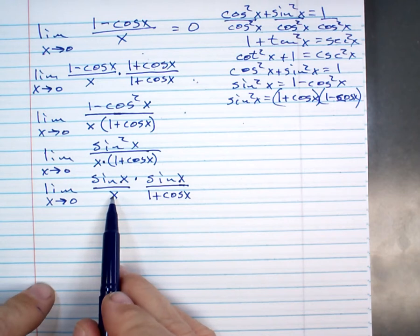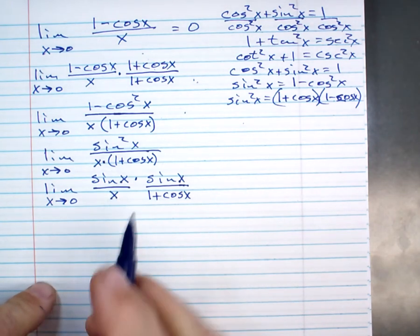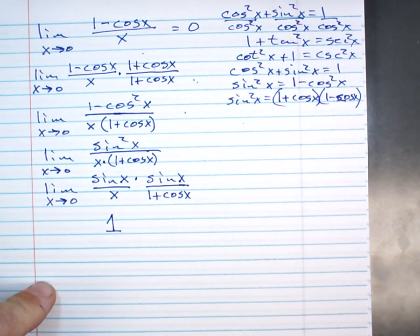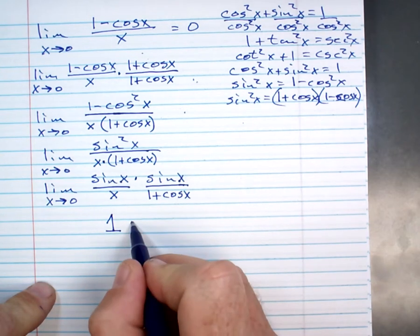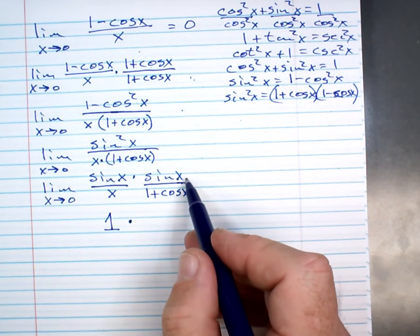Now, the property says if you have two functions you're multiplying, the limit of that is the product of the limits, right? So, what's this limit? One. Right? We just proved that a little while ago. Times.